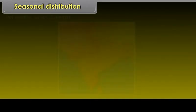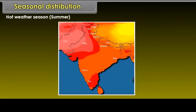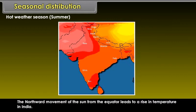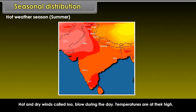During the hot weather season (summer), the northward movement of the sun from the equator leads to a rise in temperature in India. Hot and dry winds called 'loo' blow during the day. Temperatures are at their highest.